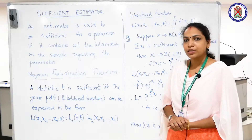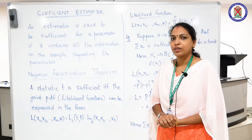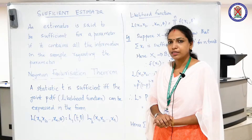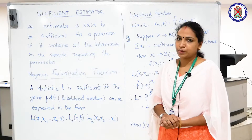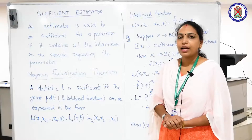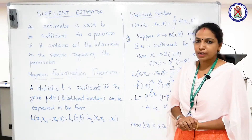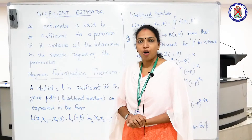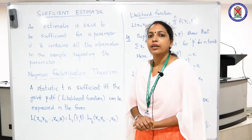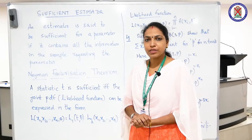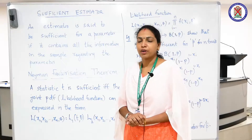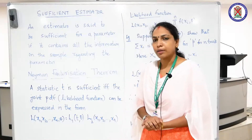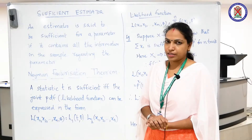In my last video we discussed about what is statistical inference and the theory of point estimation. In point estimation we were talking about the desirable properties of a good estimator and we discussed two important properties: unbiasedness and consistency.